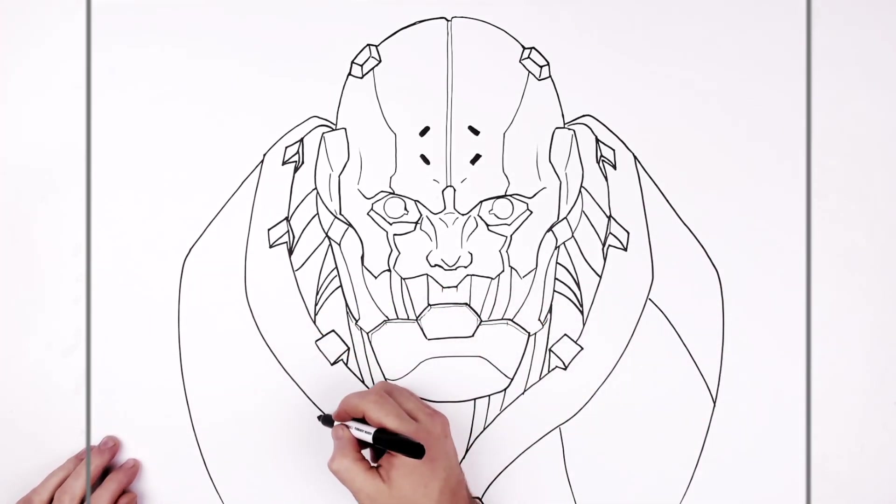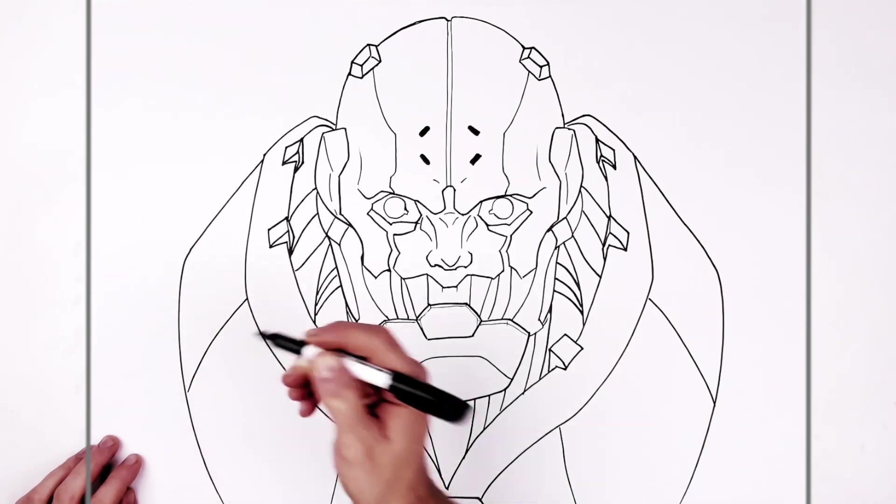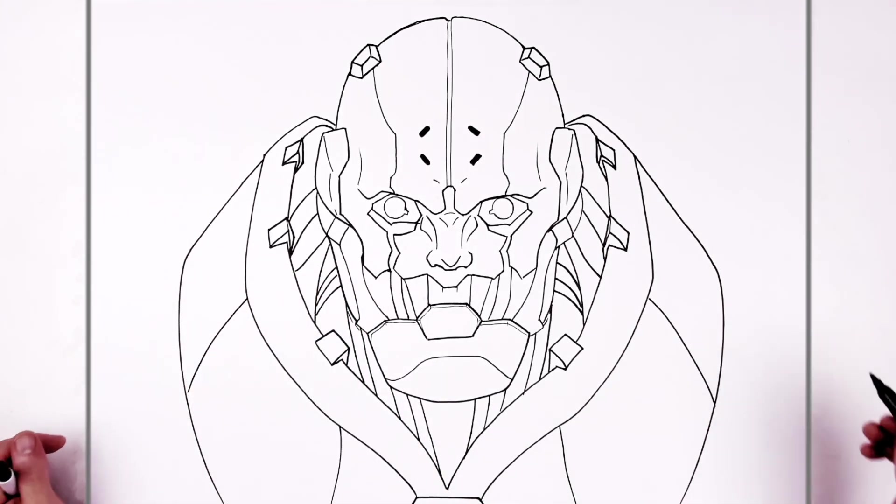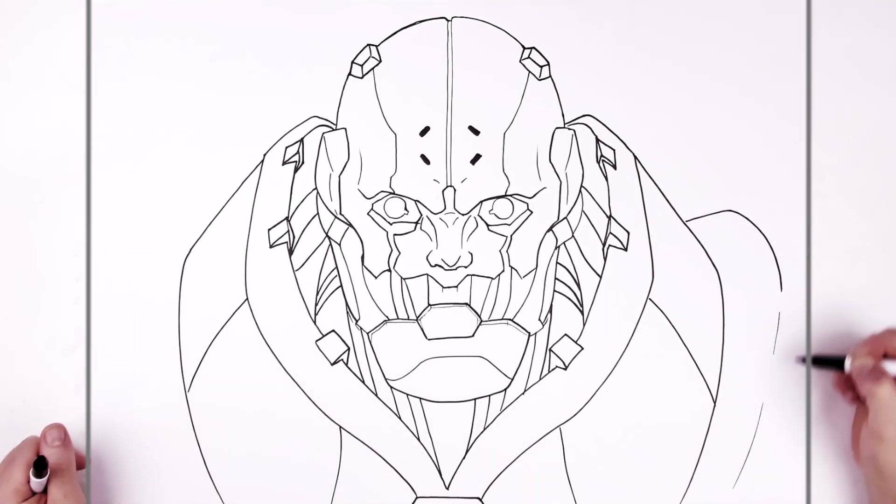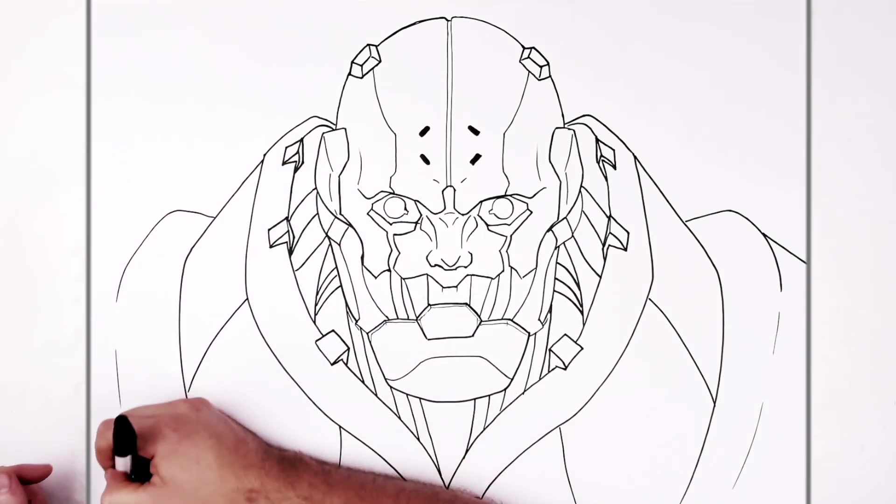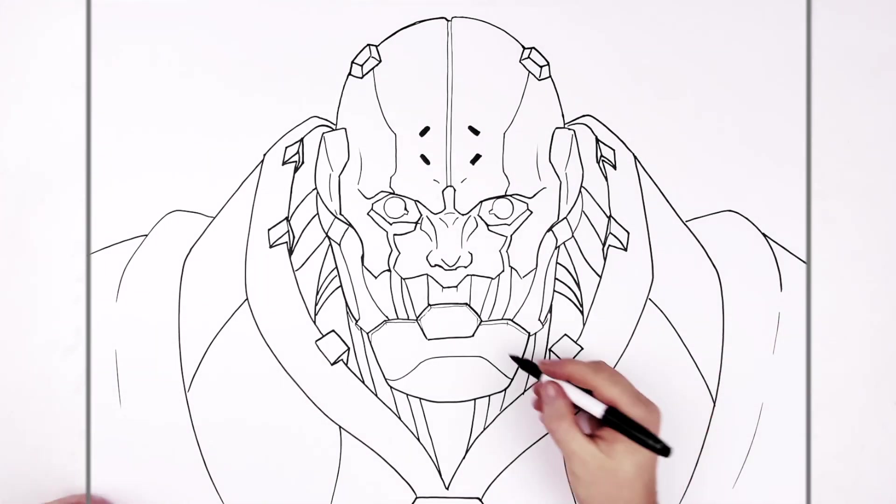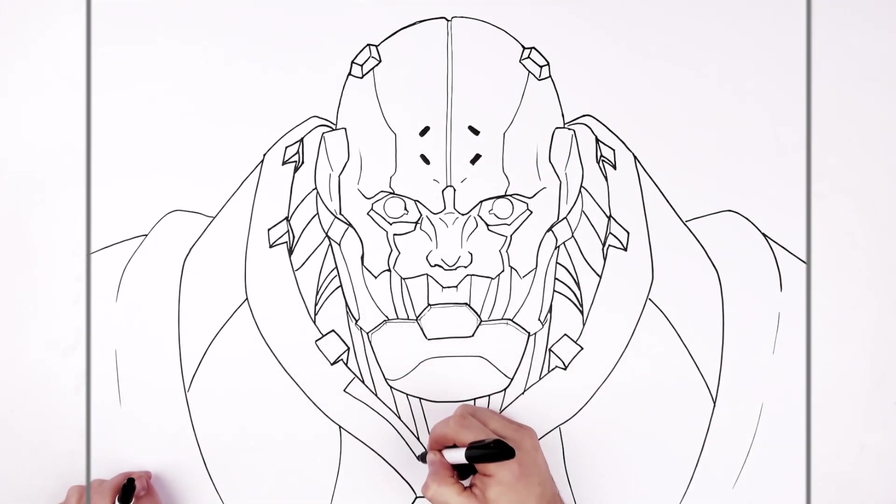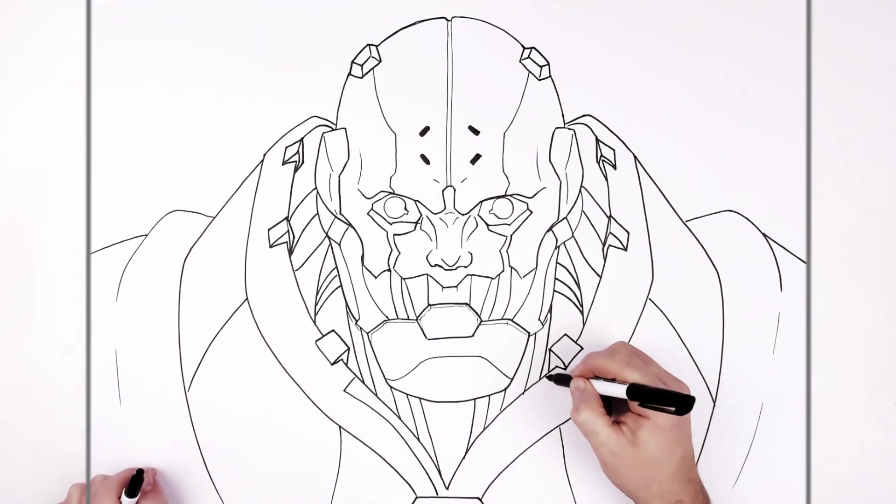So then this big collar there, and then we have shapes on it like that. And then another big pad here, it goes down that way. And then there's another rectangular shape in there, and another one here.